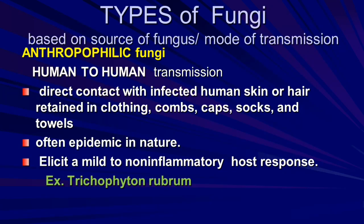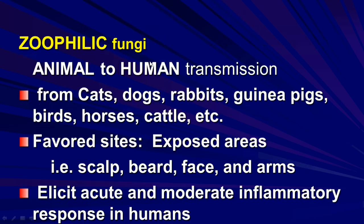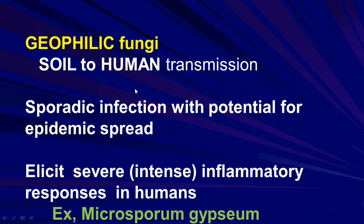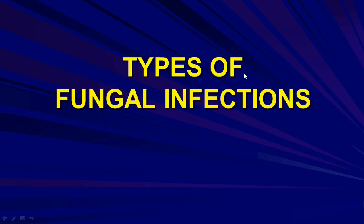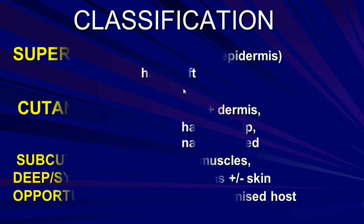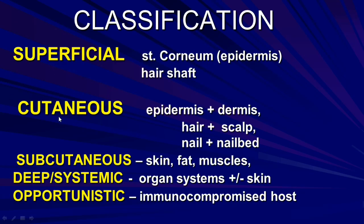We can see the types of fungi. Anthropophilic fungi: human-to-human transmission. Zoophilic fungi: animal-to-human transmission. Geophilic fungi: soil-to-human transmission. The types of fungal infections are: superficial infection, cutaneous infection, subcutaneous infection, and deep and systemic, also seen in immunocompromised patients.